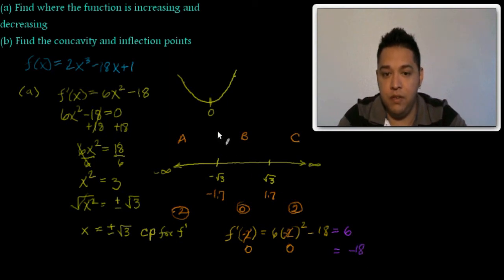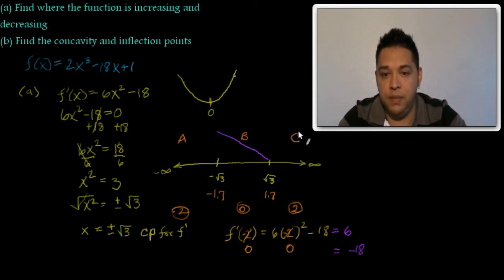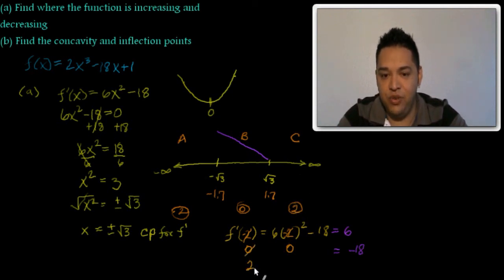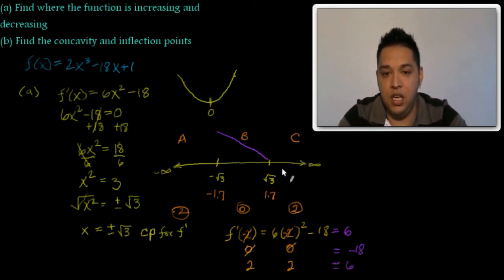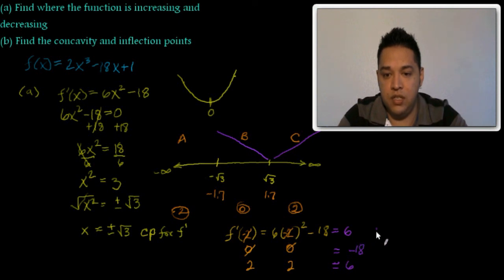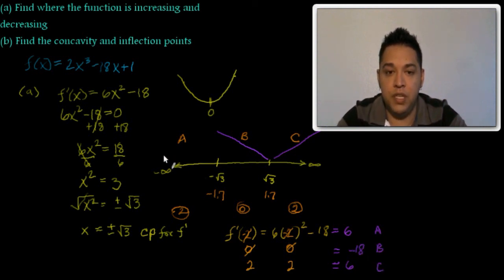A negative result in Region B means the function is decreasing there. For Region C, plugging in 2: 2² = 4, times 6 is 24, minus 18 gives 6 — positive again, so the function is increasing. Region A is positive — increasing. Region B is negative — decreasing. Region C is positive — increasing.